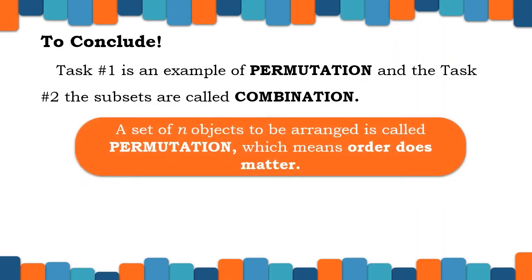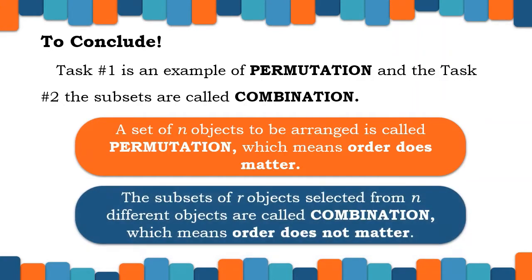A set of N objects to be arranged is called permutation, which means order matters. The subsets of R objects selected from N different objects are called combination, which means order does not matter. Just remember how to differentiate a permutation from a combination.